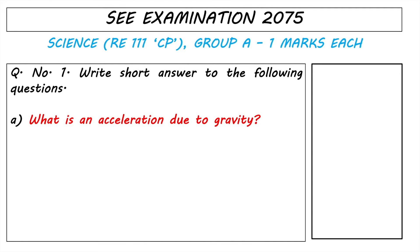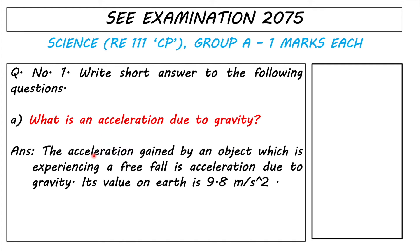Acceleration due to gravity is the acceleration gained by an object which is experiencing freefall. Its value on Earth is 9.8 meters per second squared. What you need to know is that the value of acceleration due to gravity depends on which planet you are on.